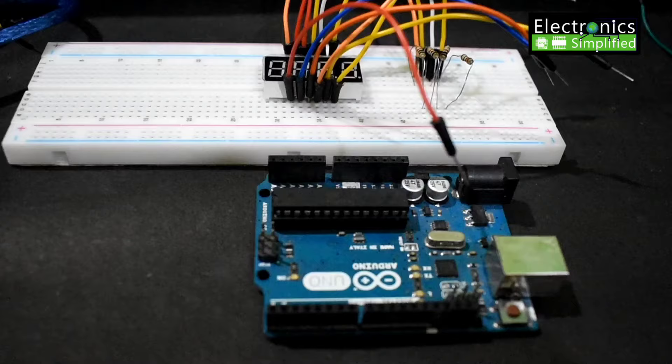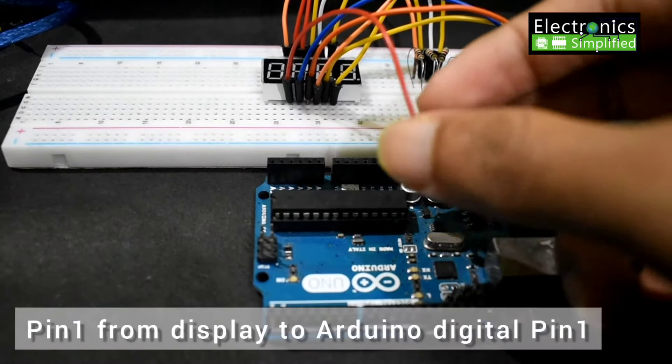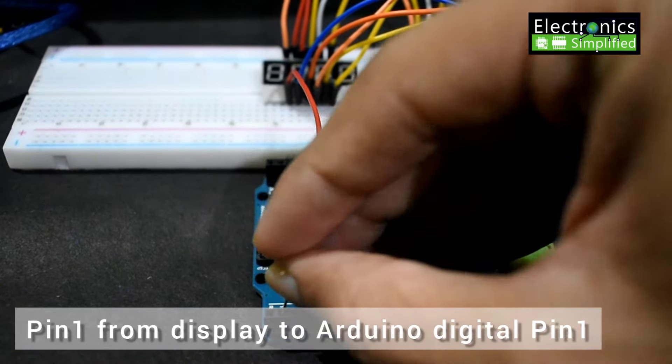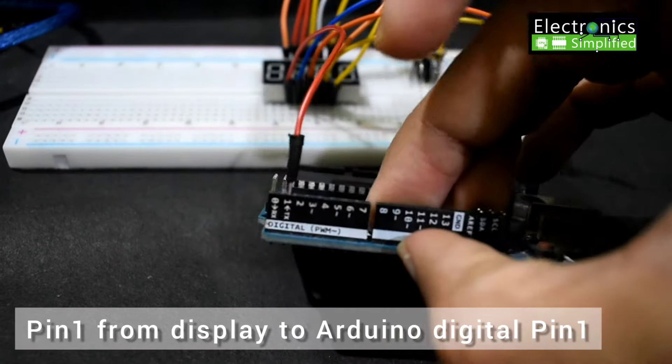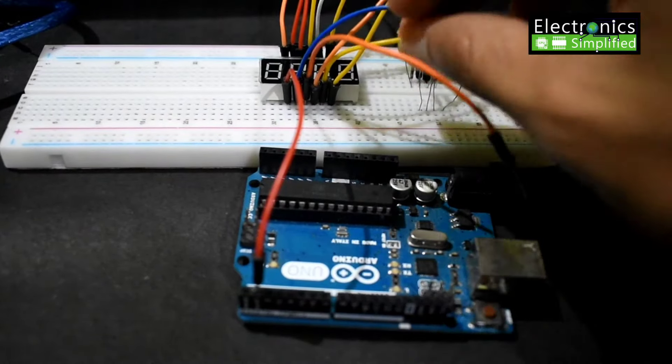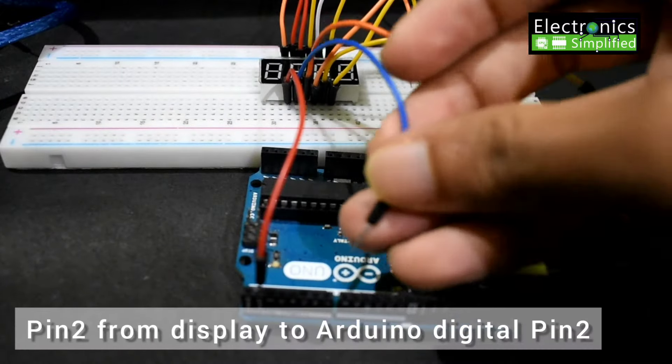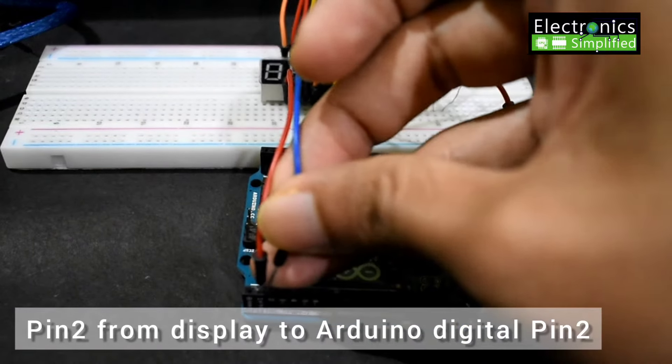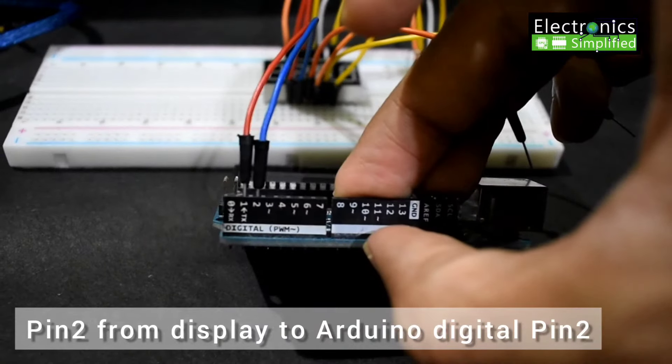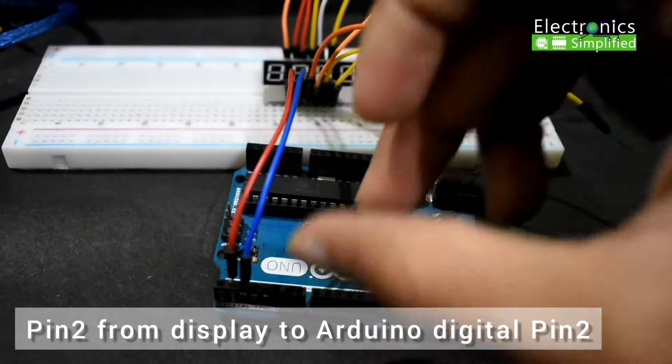We are done connecting the resistors. And now let's start connecting all the pins to Arduino. So pin number 1 goes to 1. Pin number 2 again goes to pin number 2. The blue wire, okay that is my display 2, goes to Arduino digital pin 2. If you can see that now, yeah.